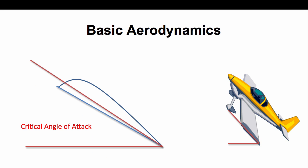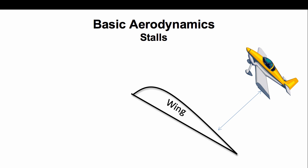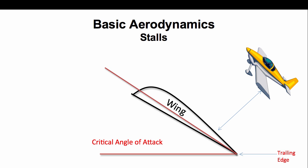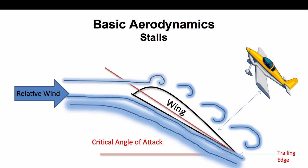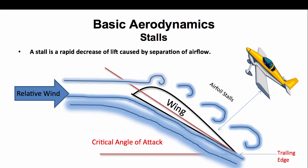However, when the angle of attack is increased beyond the maximum allowed, the lift is decreased. This causes what's called a stall. A stall is a result of a critical angle of attack, and it is also caused by the disruption of the air flow from the upper surface of the wing or airfoil. The air flow then separates at what's called the trailing edge, and progresses forward until the wing is fully stalled. Therefore, a stall is a rapid decrease of lift caused by separation of air flow.